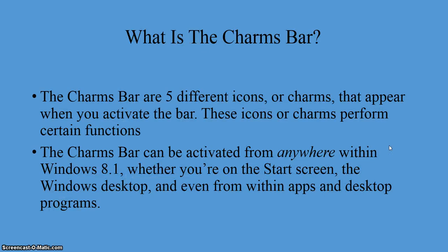So what is the charms bar? The charms bar consists of five different icons or charms that appear when you activate the bar, and these icons or charms perform certain functions. The charms bar can be activated from anywhere within the Windows 8.1 environment, whether you're on the start screen, on the Windows desktop, or even from within apps and desktop programs.